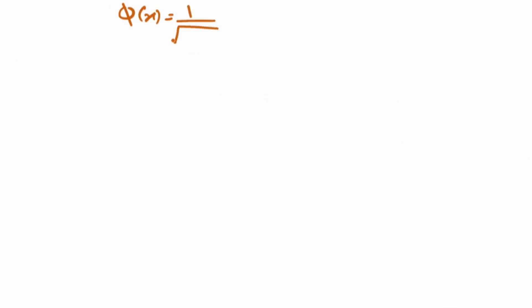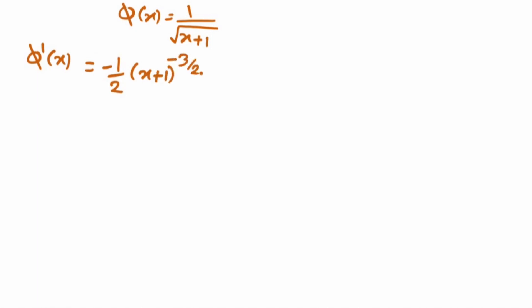So phi(x) = (x + 1)^(−1/3). Now taking the derivative, phi'(x) = −(1/3)(x + 1)^(−4/3), using the power rule that the derivative of x^n is n·x^(n−1).